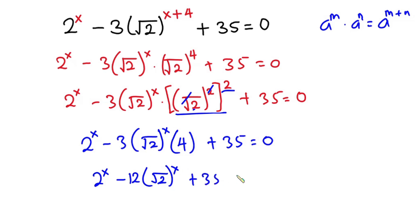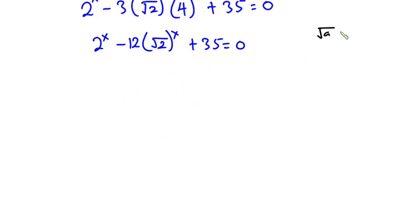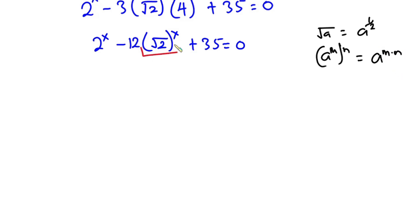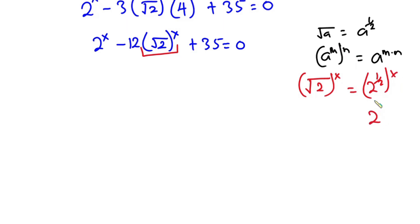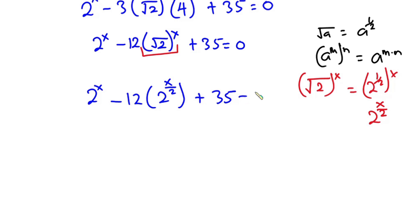Now, the square root of a is the same as a to the power 1/2, and a to the power m, raised to the power n, is the same as a to the power m times n. So the square root of 2 to the power x is the same as 2 to the power 1/2, raised to the power x, which gives 2 to the power x over 2. Replacing the square root, we have 2 to the power x, minus 12 into 2 to the power x/2, plus 35, equals 0.